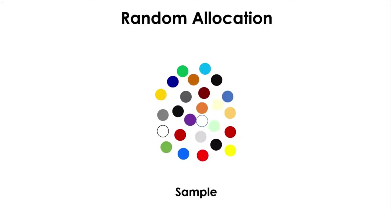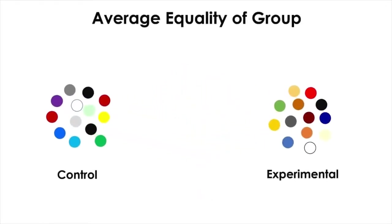We discussed the counterfactual ideal comparison group in core study design. To make the comparison fair, you want a control group that is exactly the same as the experimental group except they would not get the treatment. But this is counterfactual because it is impossible for the same person to be both control and experimental subject at the same time. Alternatively, we can have many samples and split them using random allocation, hoping that individual differences and extraneous variables are spread between the groups more or less evenly to establish baseline comparability.